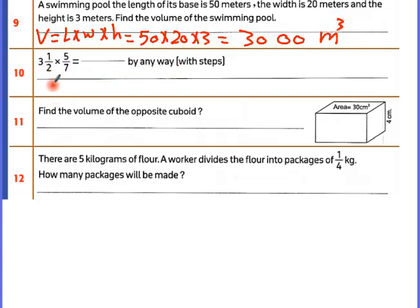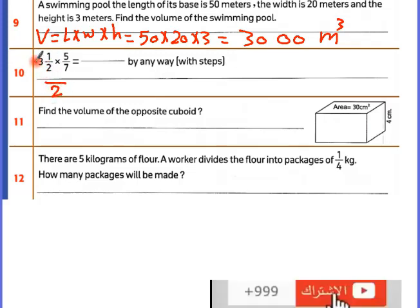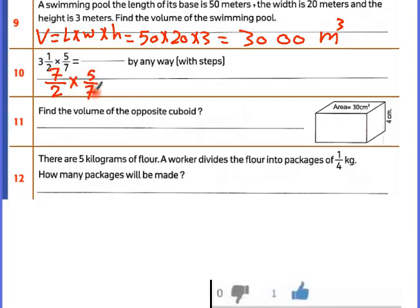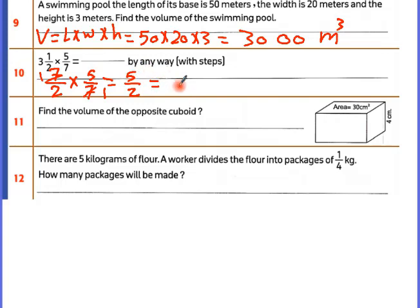Convert the mixed number: 2 times 3 is 6 plus 1 is 7, so it becomes 7 over 7 times 5 over 7 — wait, simplify: 7 and 7 cancel, leaving 5 over 2. As a mixed number: 5 divided by 2 equals 2 and 1 over 2.